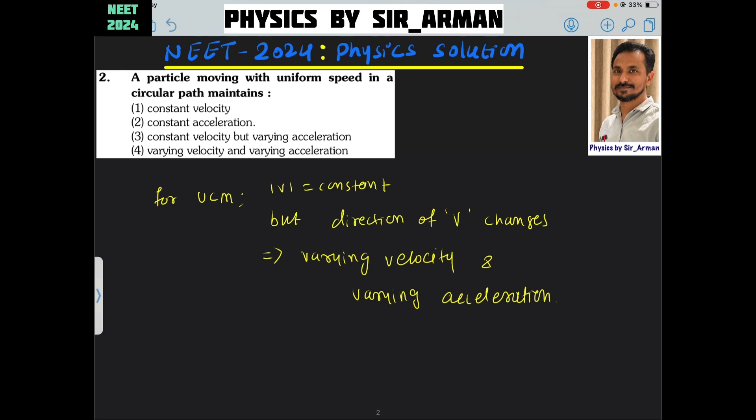Here what is given? Whenever a particle is moving in a circular path, at each point its speed—let us assume it is moving in an anti-clockwise manner—so at each point its speed is directed along these arrows.